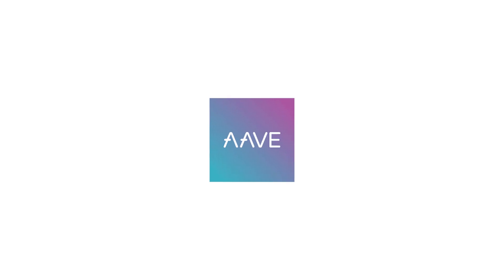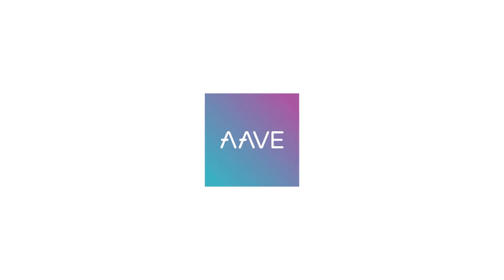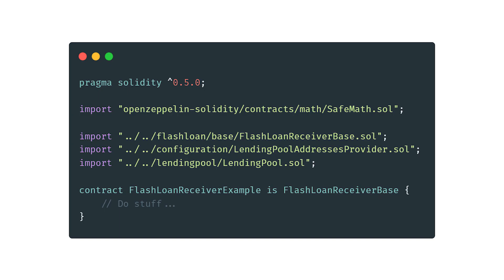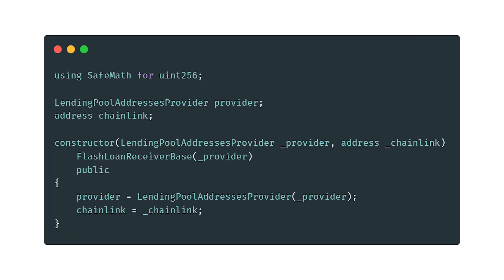One DeFi platform that allows for using flash loans is Aave, and they provide a very simple smart contract for doing so. Let's create a quick and dirty flash loan. First, we need to pull in some dependencies including SafeMath and some contracts from Aave. Then create a contract that inherits from the flash loan receiver base. Next, create some variables for a lending provider and the address of the Chainlink token contract, so we can borrow some LINK tokens. In the constructor, we need to pass the address for the Aave provider contract for the network we are operating on, and the Chainlink token address. We then call the parent constructor for flash loan receiver base, and then save our contract variables.